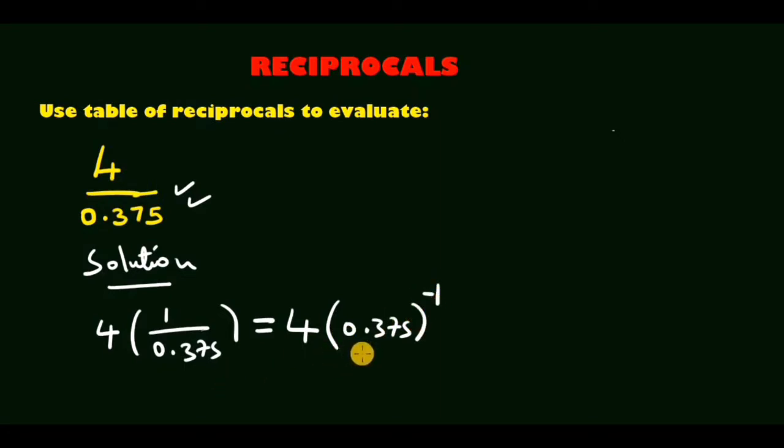Now we are going to express 0.375 in standard form. In the next step therefore we will have 4 into 3.75 times 10 power negative 1, and remember it was raised to power negative 1.